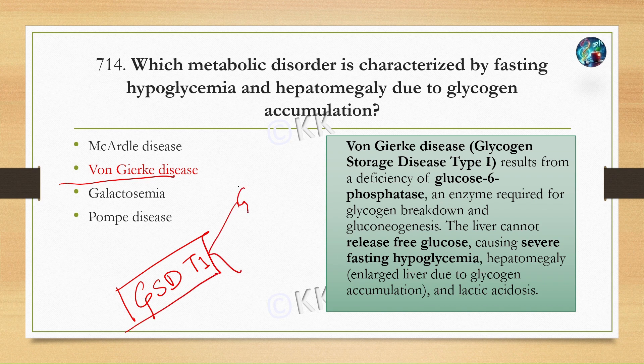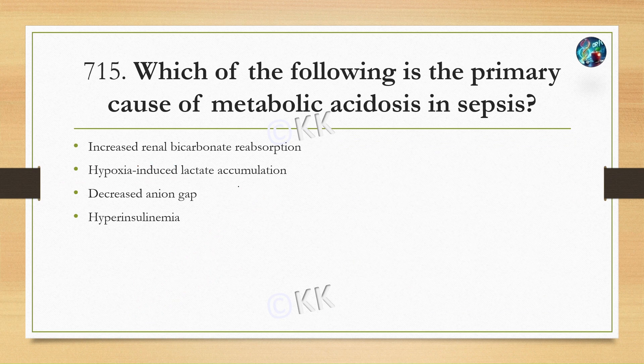Von Gierke disease results from deficiency of glucose-6-phosphatase, which plays a major role in glycogen breakdown and gluconeogenesis. In this disease, the liver cannot release free glucose, causing severe fasting hypoglycemia and hepatomegaly — enlargement of the liver due to glycogen accumulation. It may also cause lactic acidosis and elevated blood sugar.